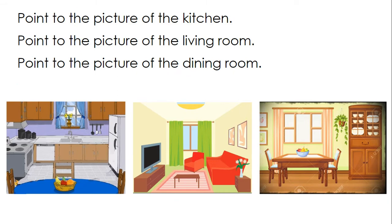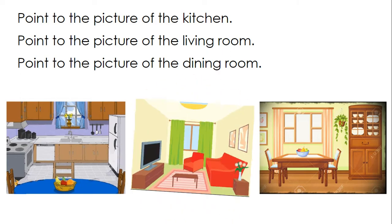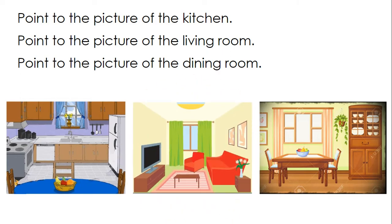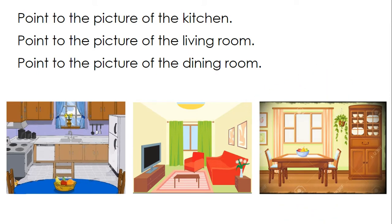Point to the picture of the kitchen. There it is with the refrigerator and the stove. Point to the picture of the living room. Great, there it is with the couch and the TV. And point to the picture of the dining room. There is the dining room table and the chairs. That's the dining room.